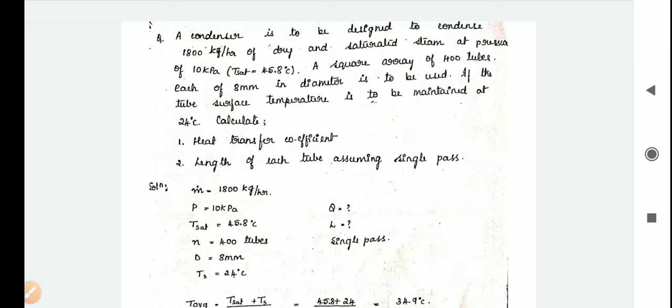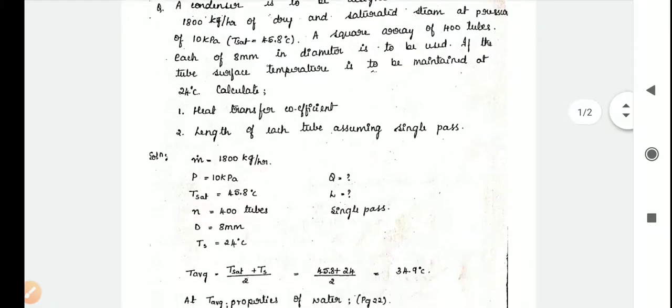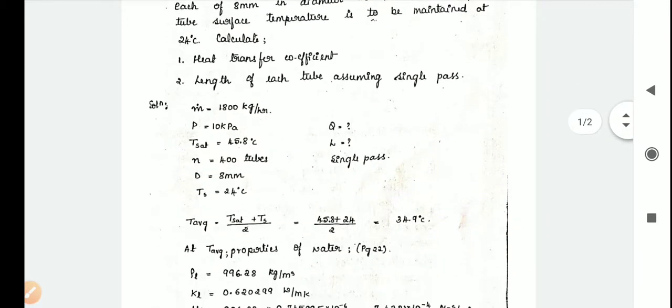If the tube surface temperature is to be maintained at 24 degrees Celsius, calculate the heat transfer coefficient and length of each tube assuming it as single pass.